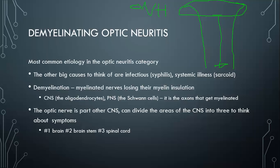What we're talking about is demyelinating optic neuritis, and this is the big thing in the optic neuritis category — the most common one. For optic neuropathy, the big one is ischemic optic neuropathy, such as arteritic ischemic optic neuropathy, also called giant cell, or nonarteritic ischemic optic neuropathy. There are also hereditary optic neuropathies — Leber hereditary optic neuropathy — and nutritional optic neuropathies.